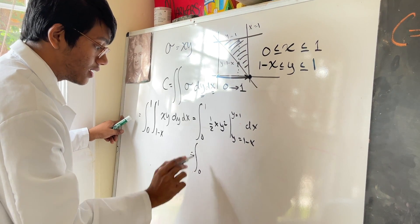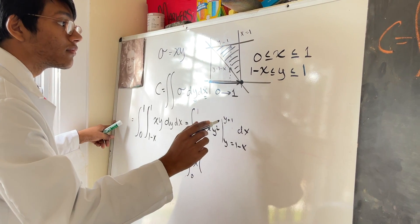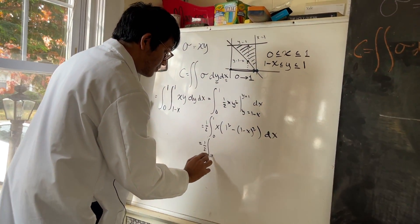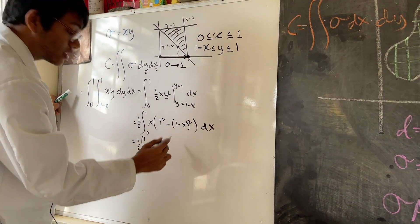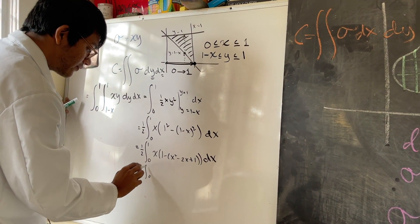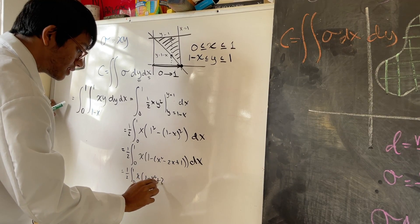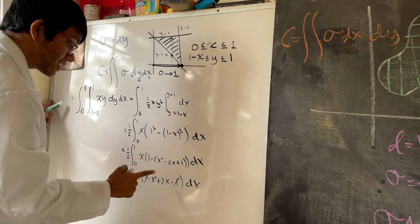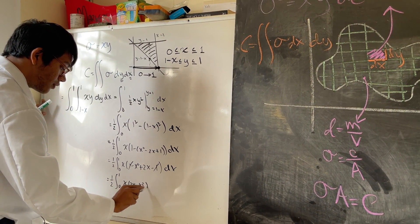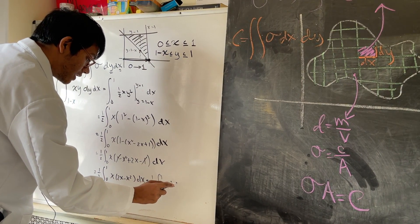Evaluating the inner integral gives one-half x times (1 squared minus (1 minus x) squared) dx. Expanding (1 minus x) squared gives x squared minus 2x plus 1, so 1 minus (1 minus x) squared simplifies to 2x minus x squared. We're then left with the integral from 0 to 1 of one-half times x times (2x minus x squared) dx, which equals one-half times the integral from 0 to 1 of 2x squared minus x cubed dx.